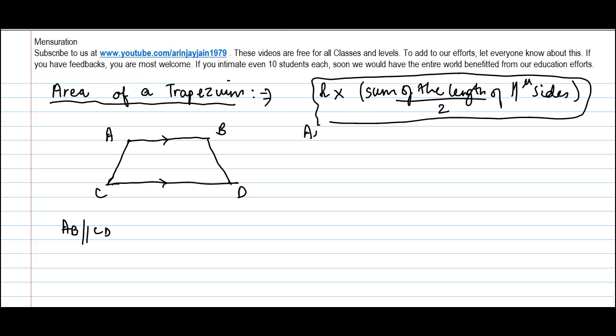Let us say we draw a line perpendicular from A to the line CD. And similarly, we extend it from point B such that we draw another perpendicular line. Now, this basically is the height.